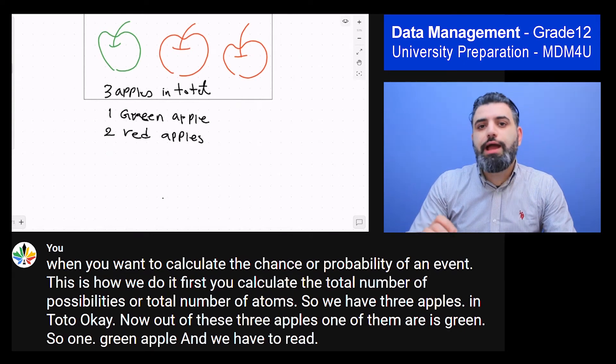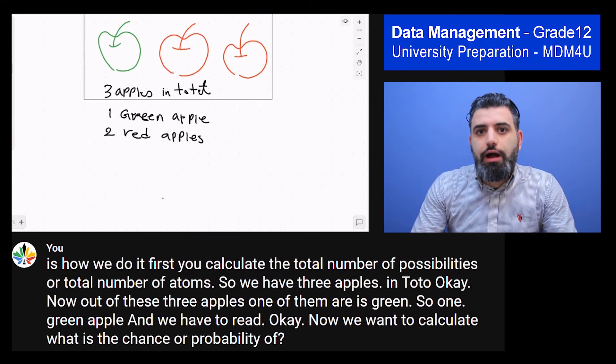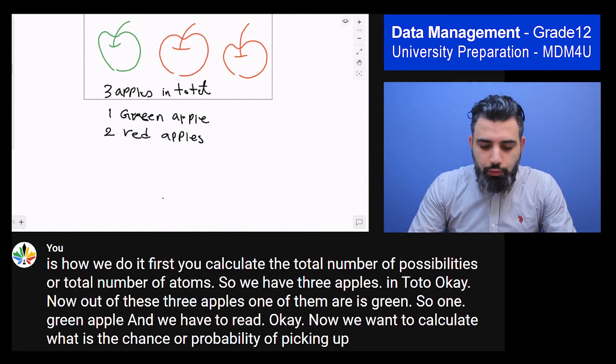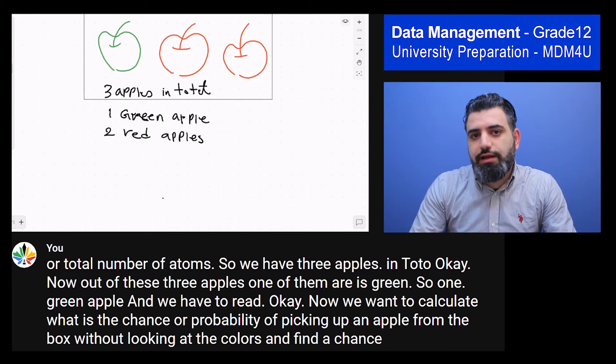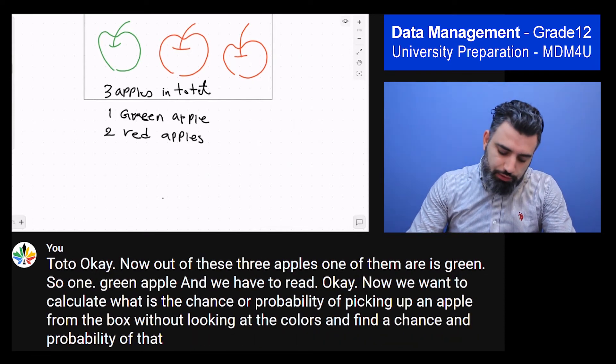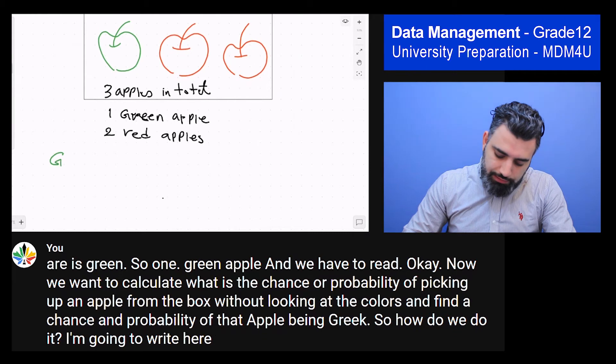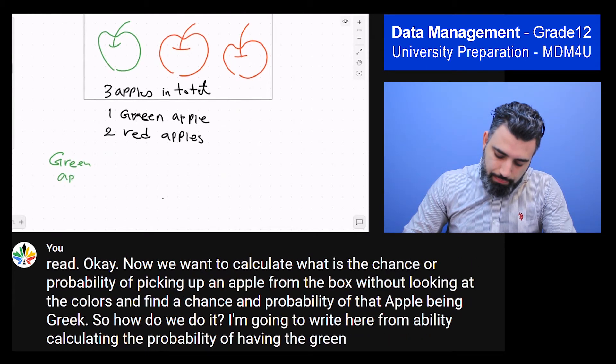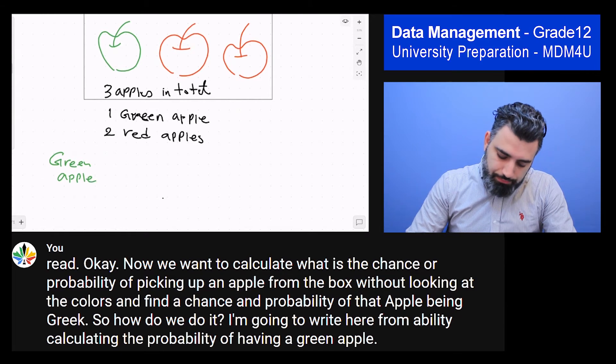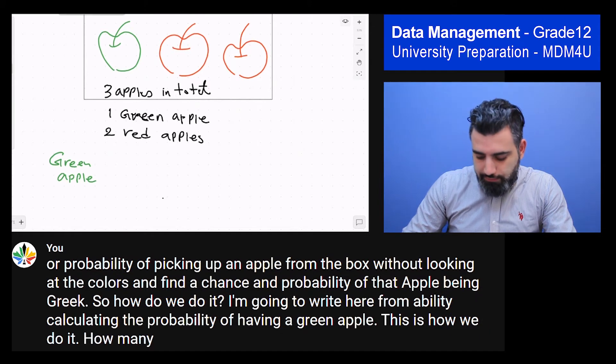Now we want to calculate what is the chance or probability of picking up an apple from the box without looking at the colors and find the chance and probability of that apple being green. So how do we do it? I'm going to write here probability, calculating the probability of having a green apple. This is how we do it. How many green apples do we have? One.